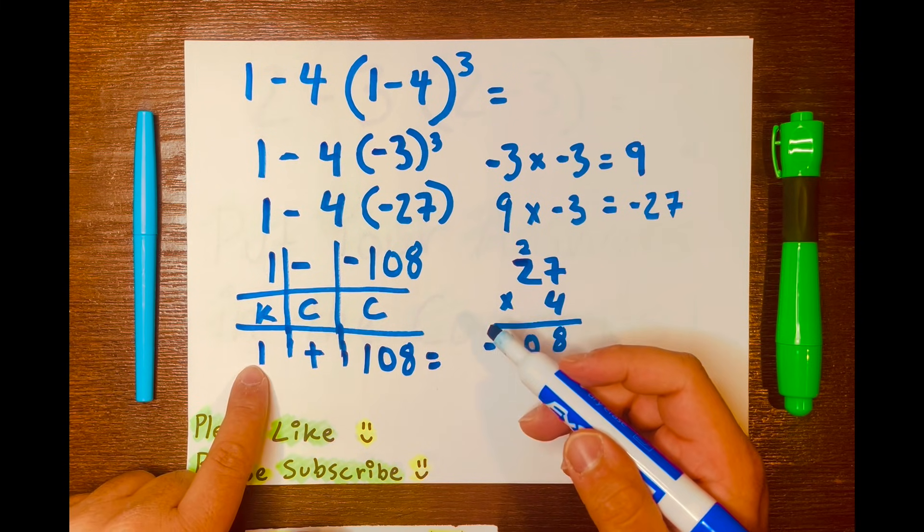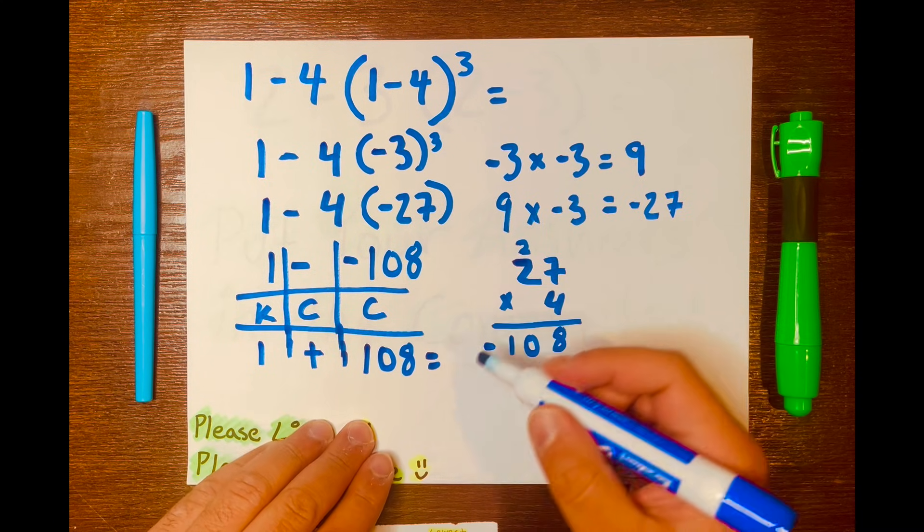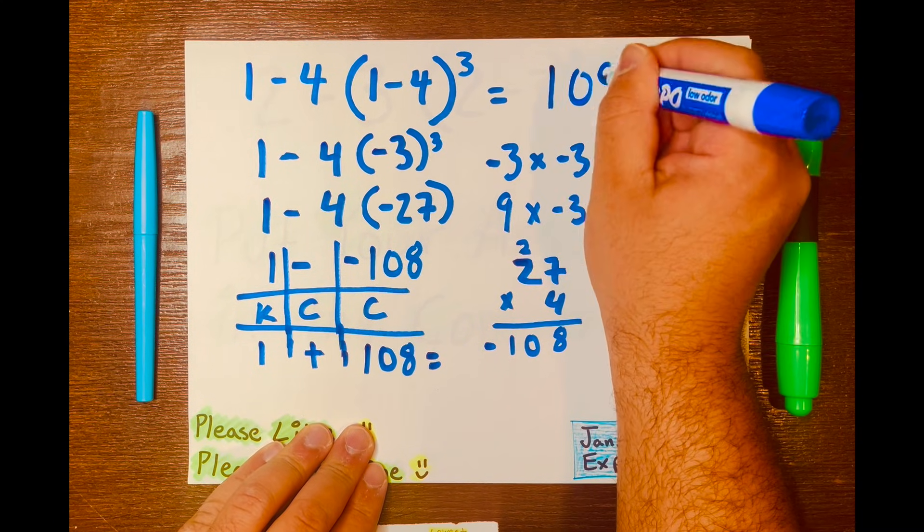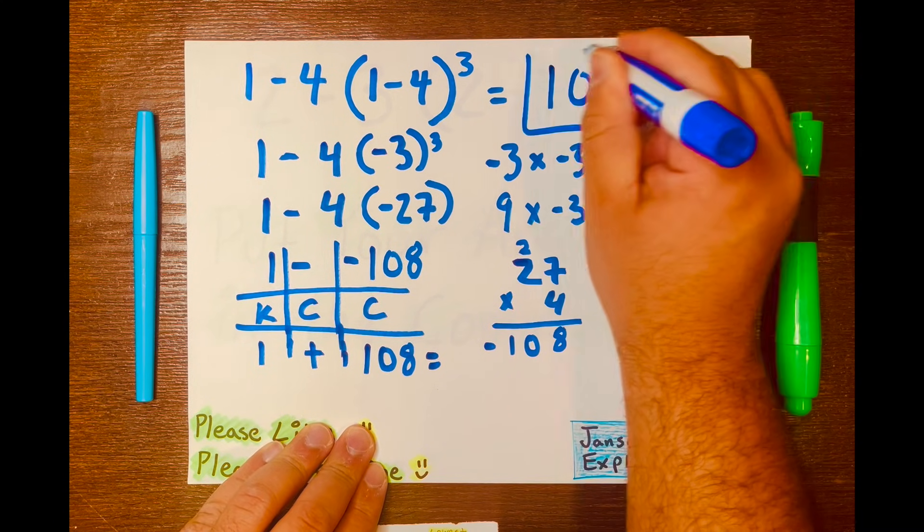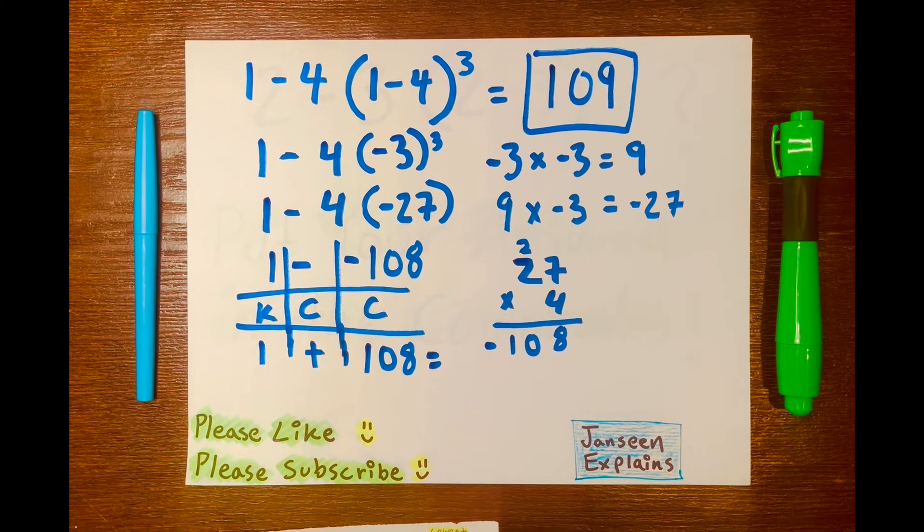And then we just add across. 1 plus 108 equals 109. And that is your answer. 109 is your answer. And there you go.